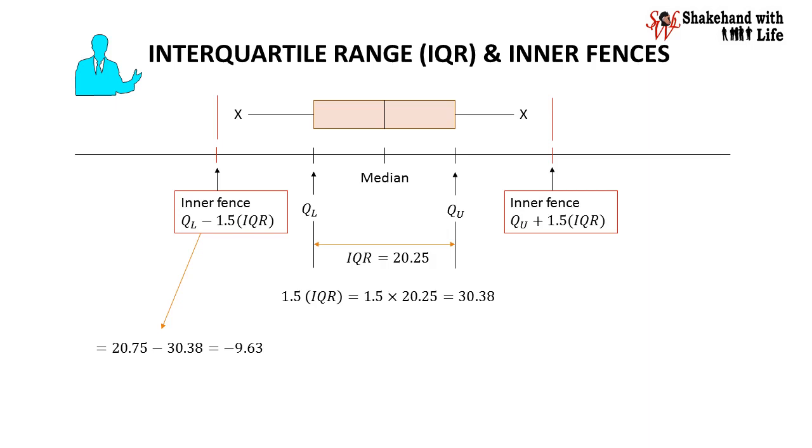Position of the upper inner fence will be upper quartile QU plus 1.5 IQR or 41 plus 30.38 and we get 71.38.